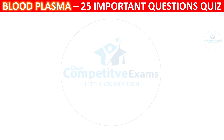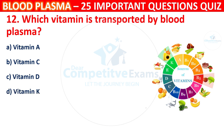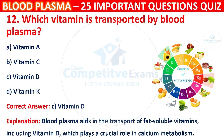Question 12: Which Vitamin is transported by Blood Plasma? Your options are Vitamin A, Vitamin C, Vitamin D, or Vitamin K. The correct answer is C, i.e. Vitamin D. Blood Plasma aids in the transport of fat-soluble vitamins, including Vitamin D, which plays a crucial role in calcium metabolism.